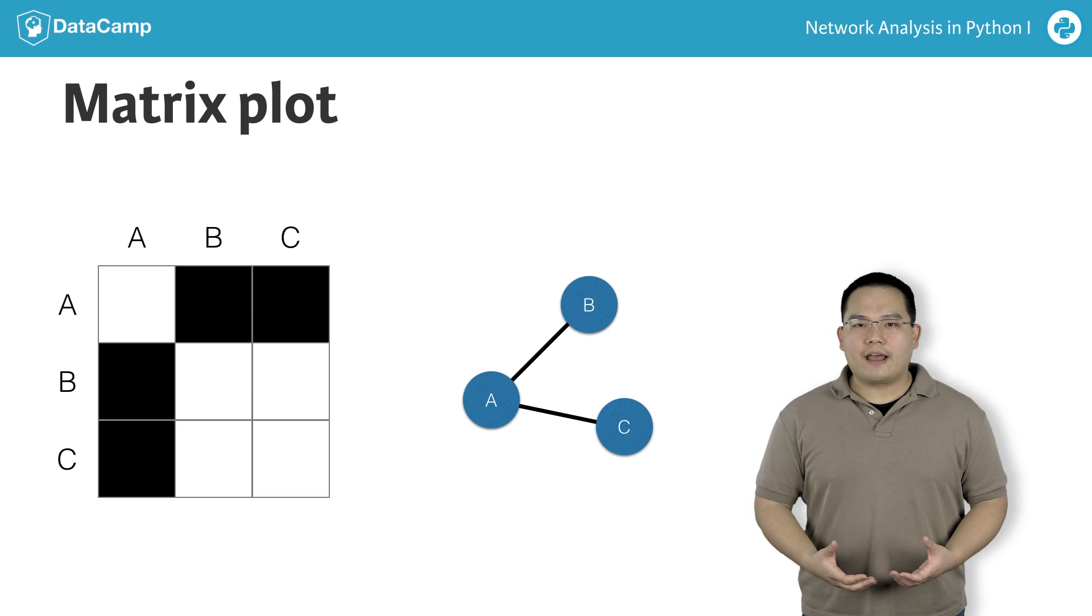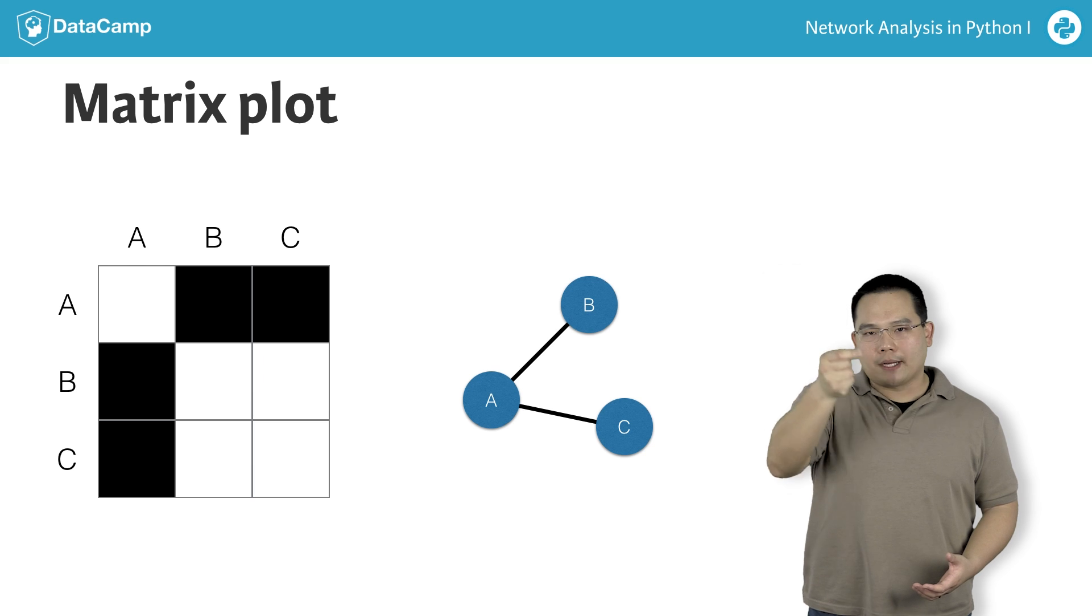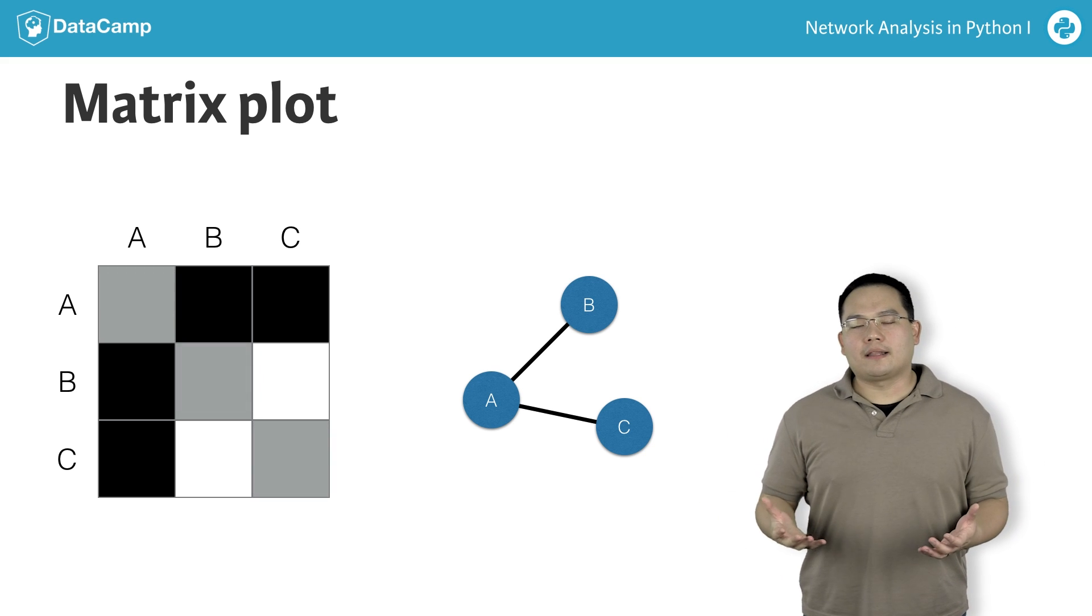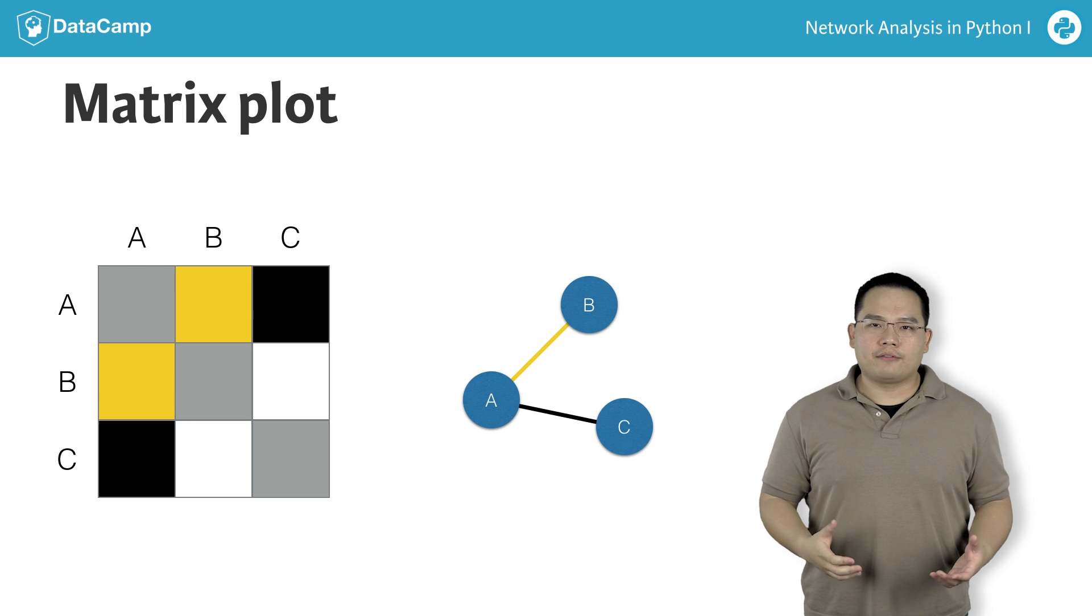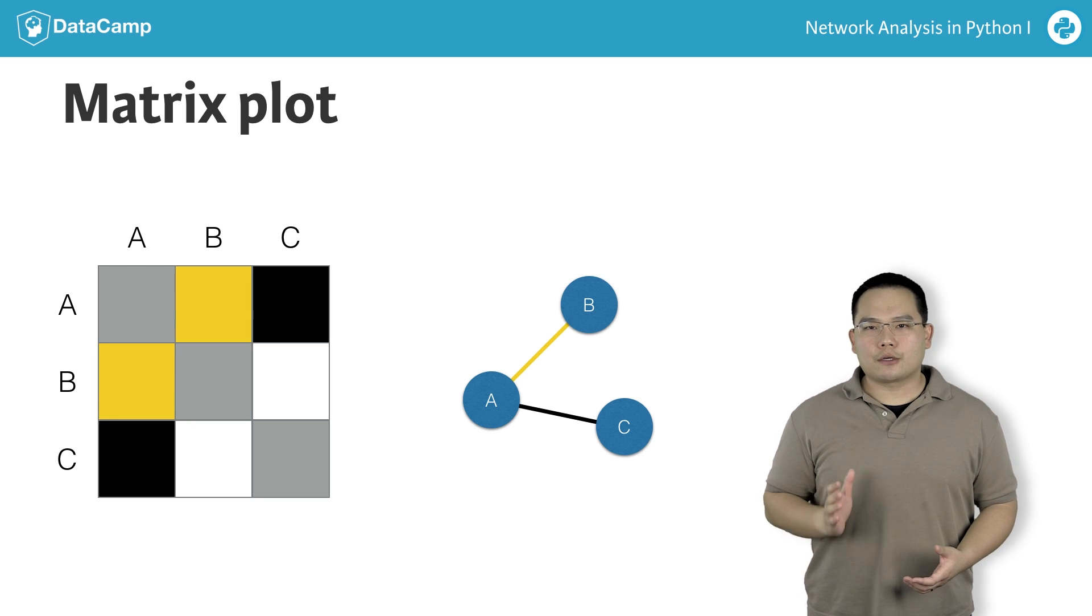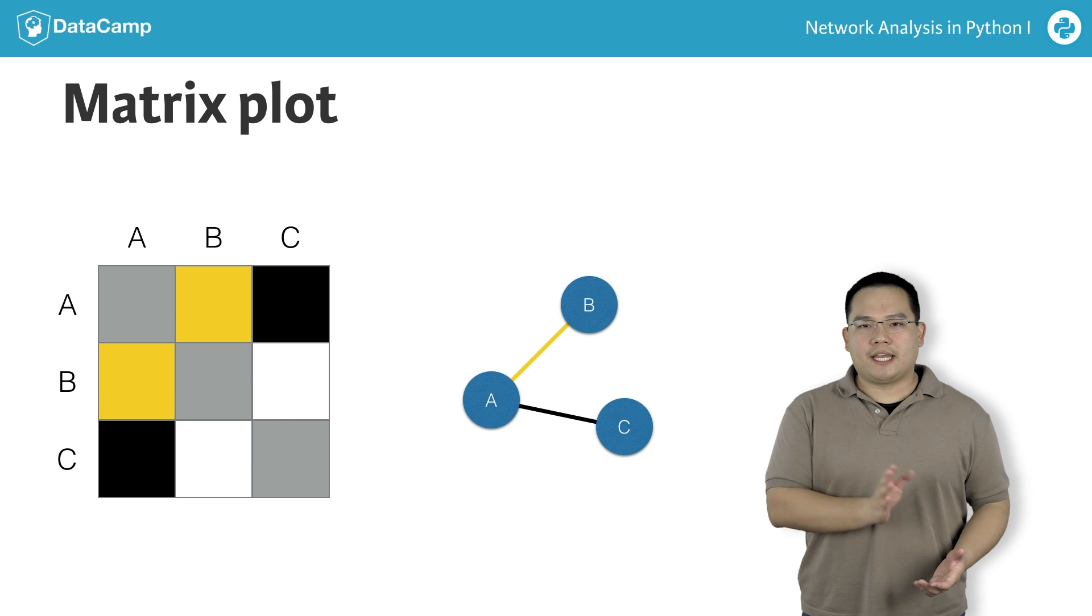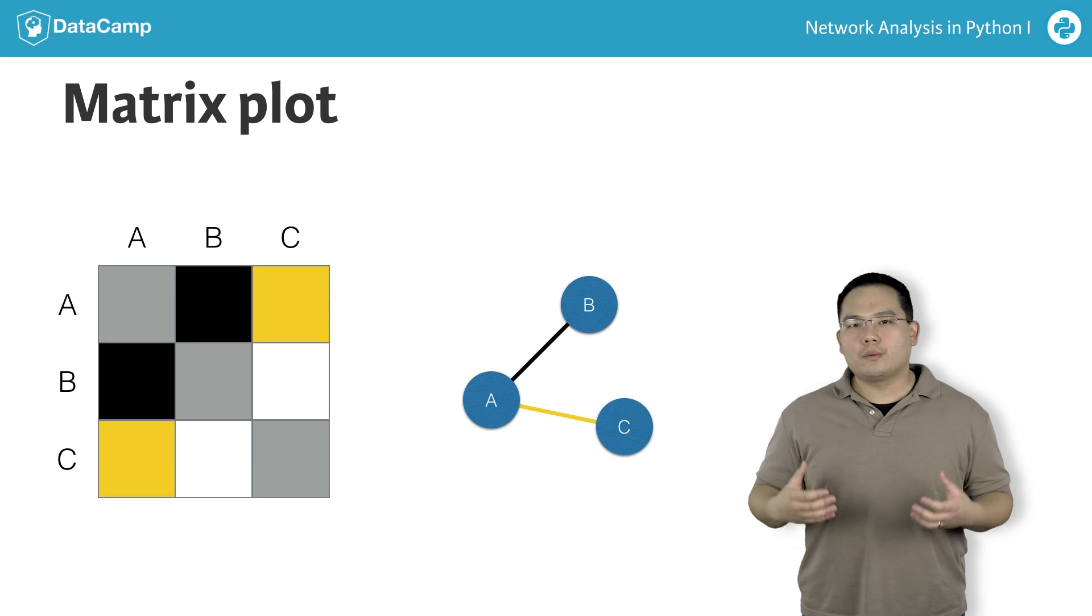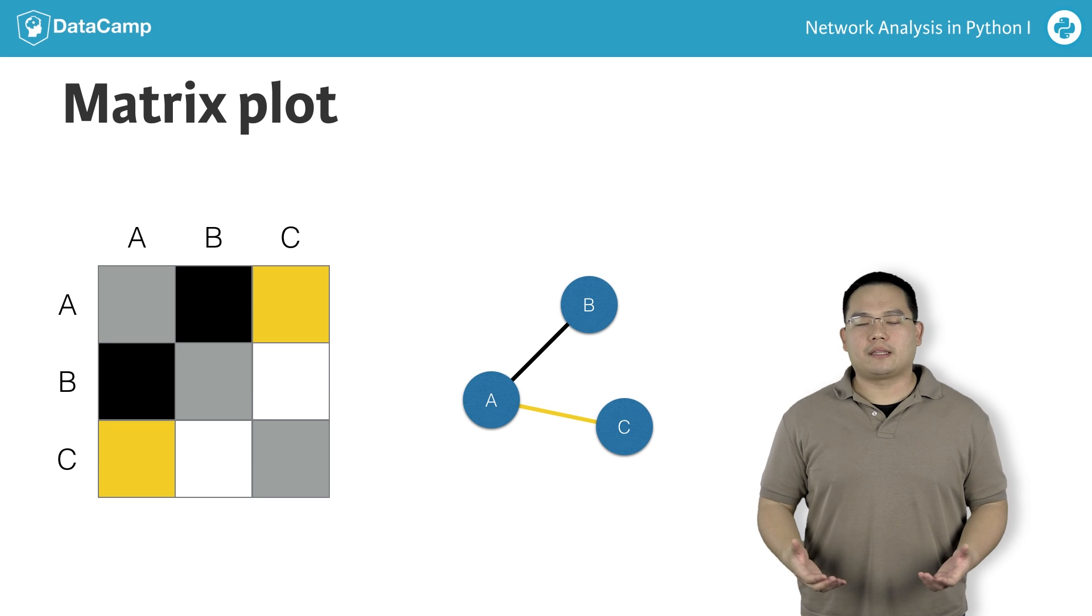In an undirected graph, the matrix is symmetrical around the diagonal, which I've highlighted in gray. I've also highlighted one edge in the toy graph, edge AB, which is equivalent to the edge BA. Likewise, for edge AC, it is equivalent to the edge CA, because there's no directionality associated with that edge.